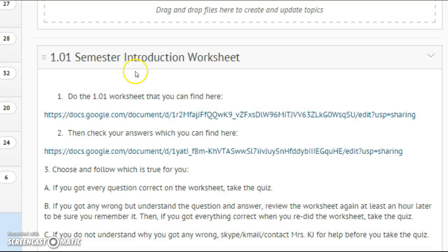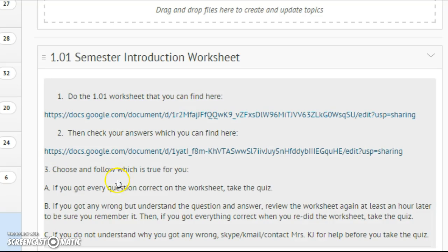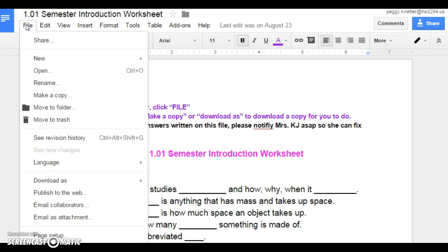So then you are going to go to the worksheet, and here's the link to get the worksheet and to check the answers. And then, of course, it says choose and follow what is true for you. When you go to the worksheet, it explains right away that if you have Google, you can make a copy, or you can download it if you want. Whatever way to do the worksheet, it's up to you. Bye!